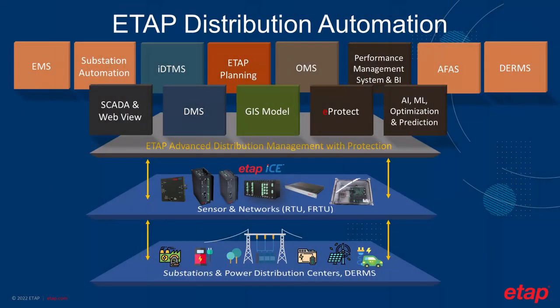The implementation of an ADMS solution requires infrastructure to communicate to field devices in the substations, field RTUs, and all distributed energy resources. ETAP provides virtual or physical RTUs, data concentrators, and controllers to communicate the ADMS solution to field devices with ease. In addition, if the infrastructure already exists, ETAP is an open platform that can communicate to third-party equipment using standard communication protocols. At the software level, the system can be hosted on-premise in physical or virtual machines, or in the cloud.